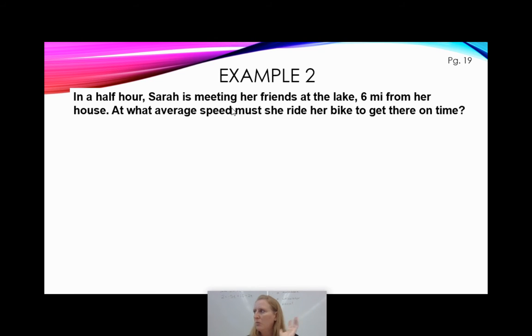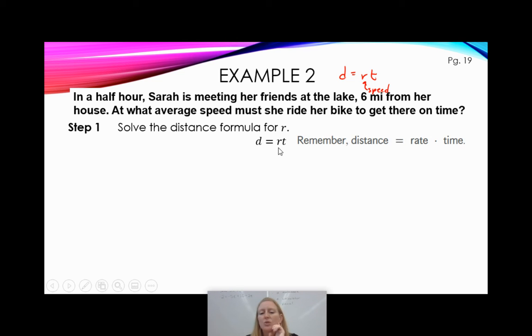So remember the distance formula? It's been a while. Distance formula, D equals RT. Distance equals rate, also known as speed. Distance equals rate times time, also known as speed. So we're going to solve the distance formula for R. We're going to solve it for R because that's what we want. What's her average speed? What should her rate be? So remember that distance equals rate times time. So D equals RT. We do want to solve for R. Right now I have R times T. We undo multiplication with division. So that cancels out. So now I have R equals D over T, which is great. This is what I needed. To find her average rate of speed, I need to take the distance and divide by time. So fine. I can do that.